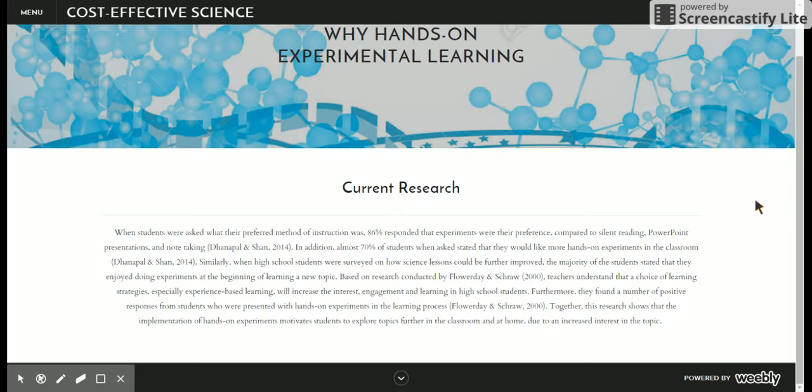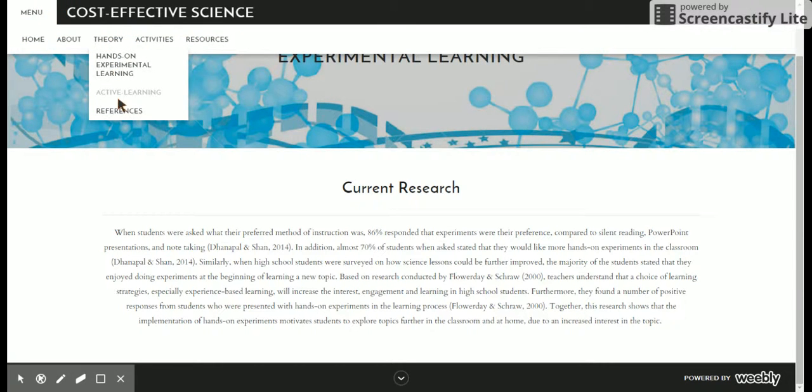First, when students were asked what they preferred for their instructional methods, 86% of those students responded that experiments were preferred compared to silent reading tasks, PowerPoint presentations, note-taking, and standard lecture style. In addition, almost 70% of students stated that they would like more hands-on experiments in the classroom. This shows that students want hands-on experimental learning, and all the students tested in this study were high school students in the science stream.